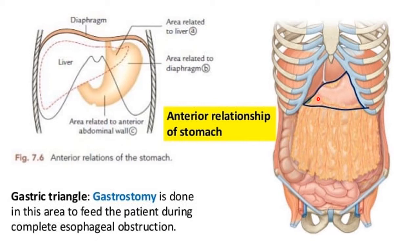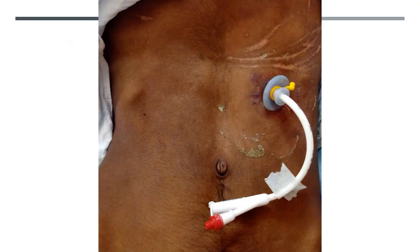There are no important structures present in this area, so we can easily pierce the catheter into the stomach. That is about the gastric triangle and its clinical importance. In this picture we can identify how gastrostomy operations are usually done.